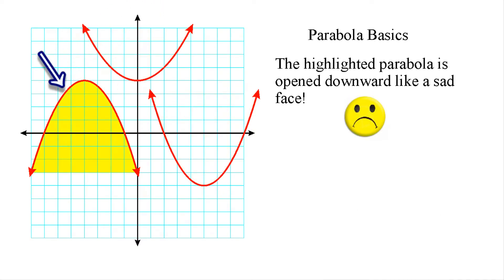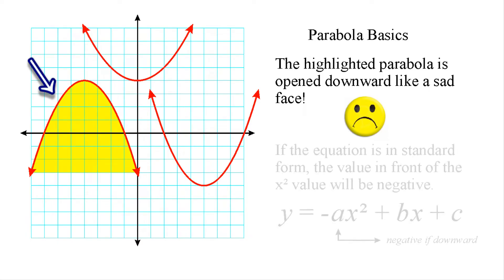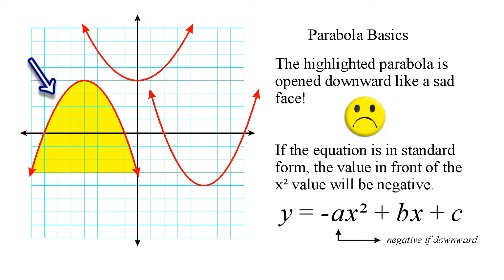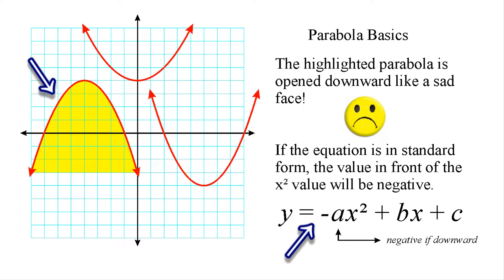And of course, some parabolas are going to be opened downwards, and that kind of looks like a sad face. In the future, when we start graphing and dealing with the equations that represent parabolas, you will see that the value in front of your x-squared term is going to be a negative value. So before you even graph, if you see that value in front of the x-squared term as a negative value, then you automatically know that it's going to create a sad face or a parabola that is opened downwards.